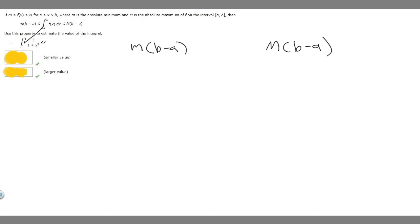So b is going to be 4, a is going to be 0. And so we can find what b minus a is for each of these. So m times 4 minus 0 is just going to be 4. And then so this one is going to be uppercase M times 4.